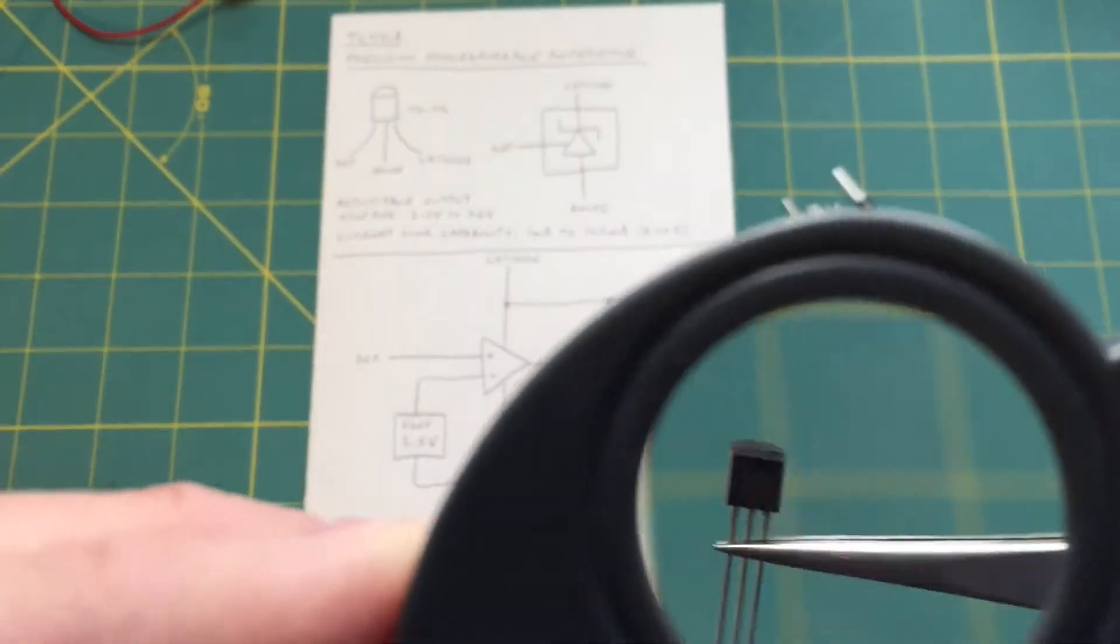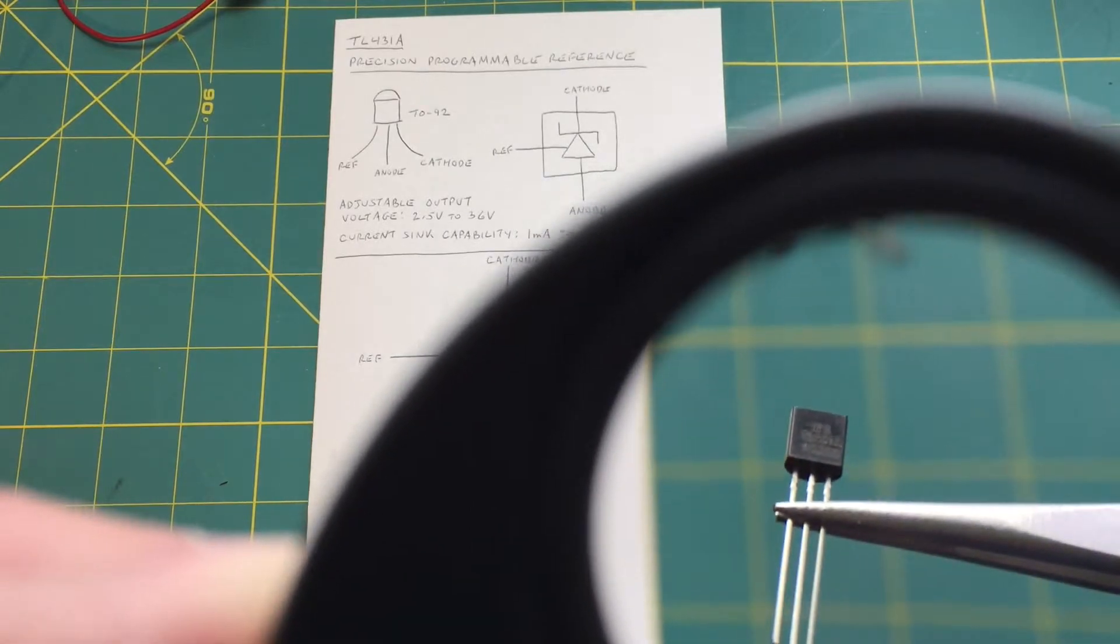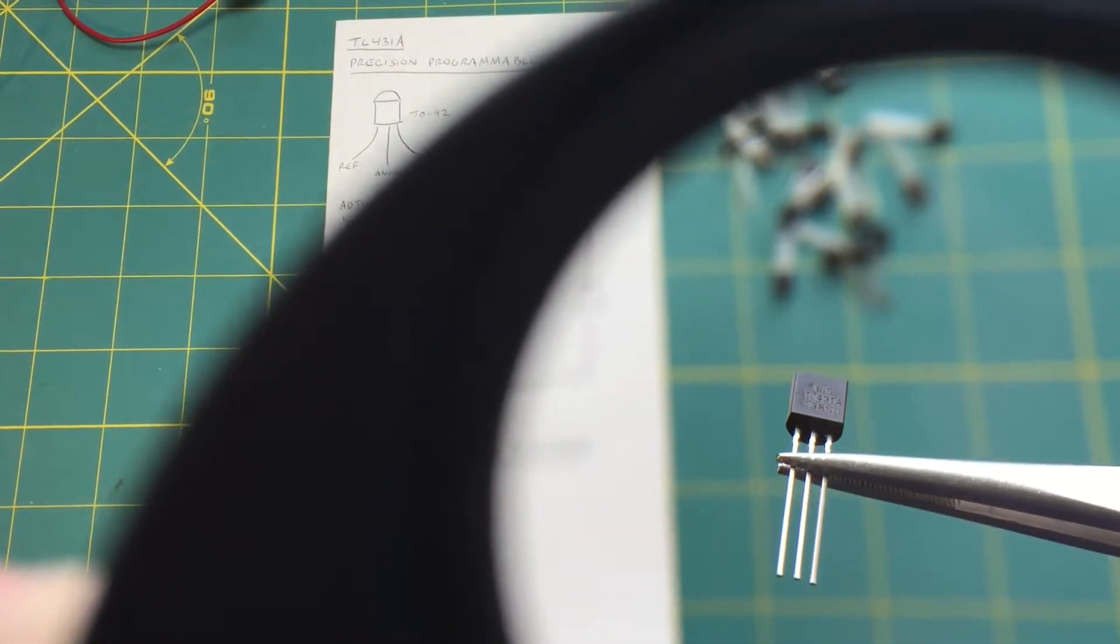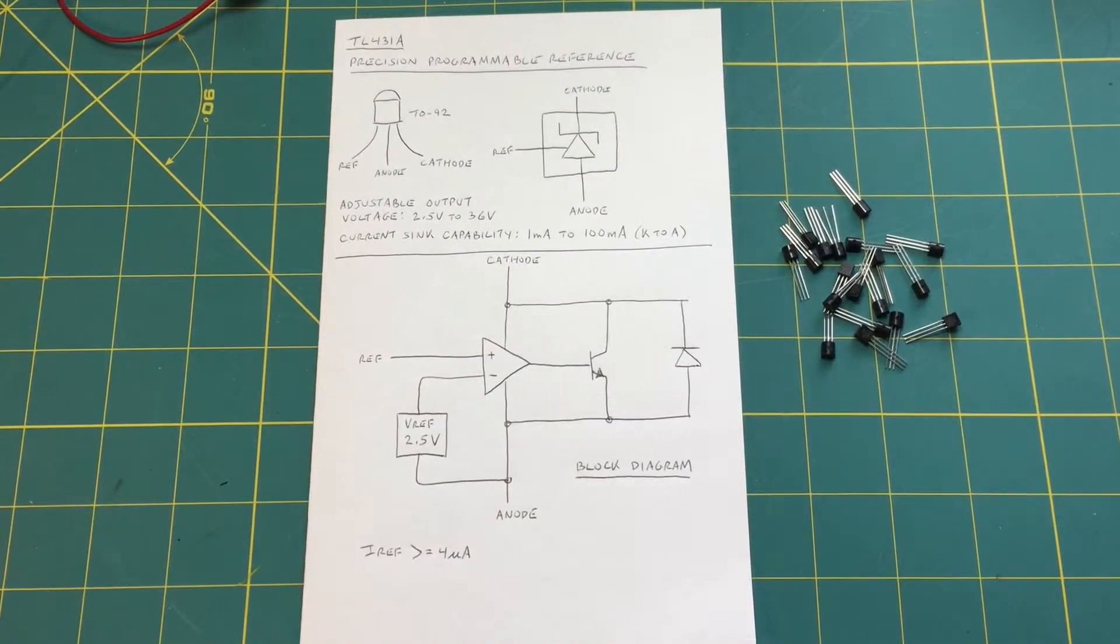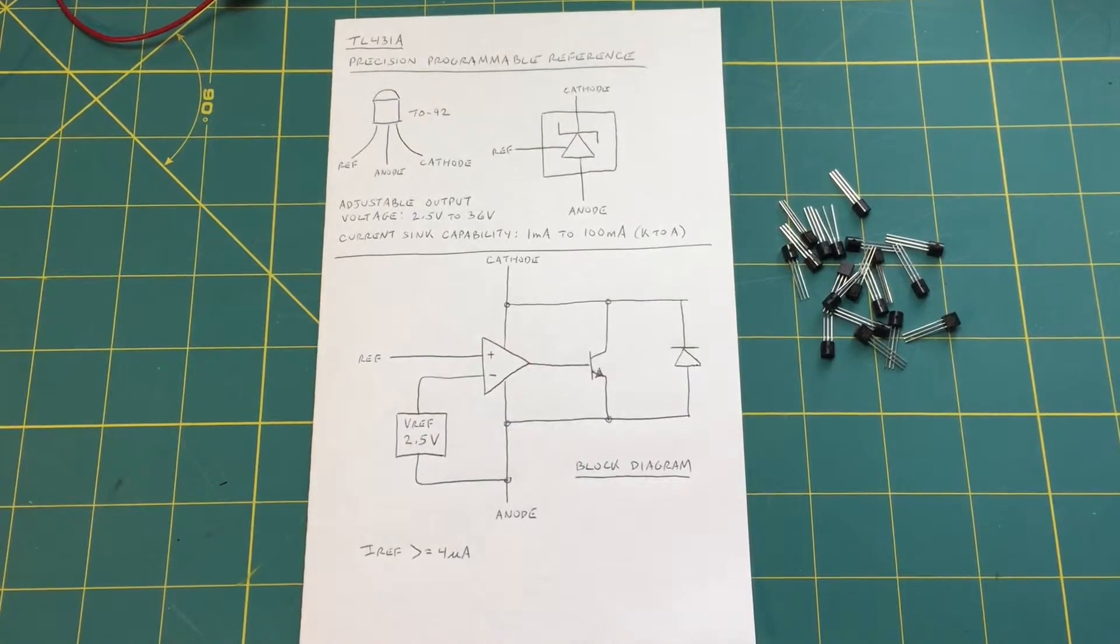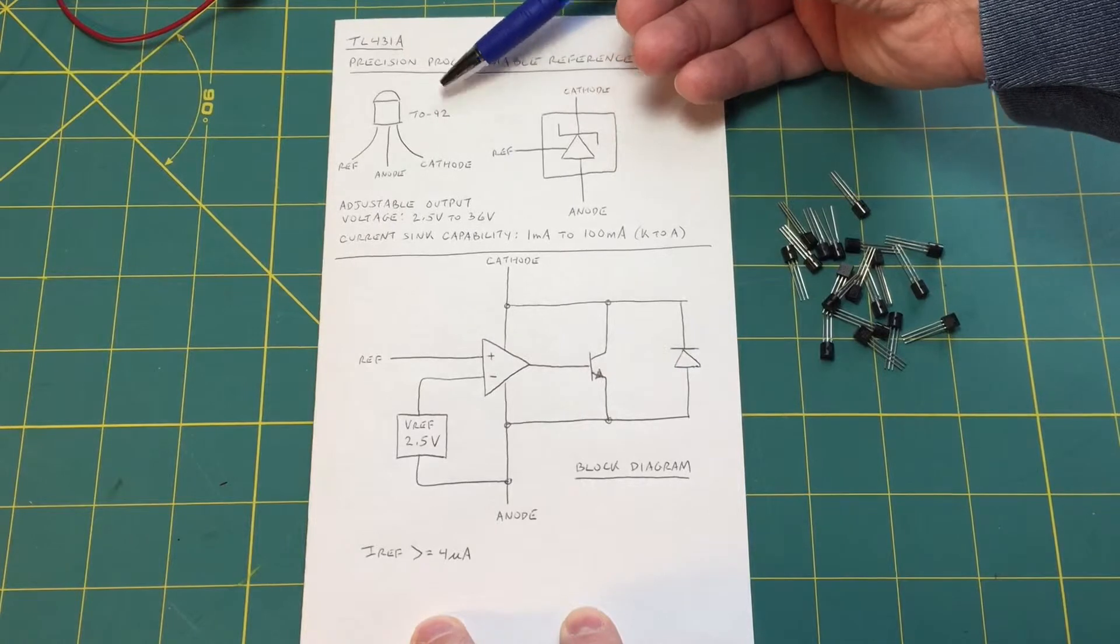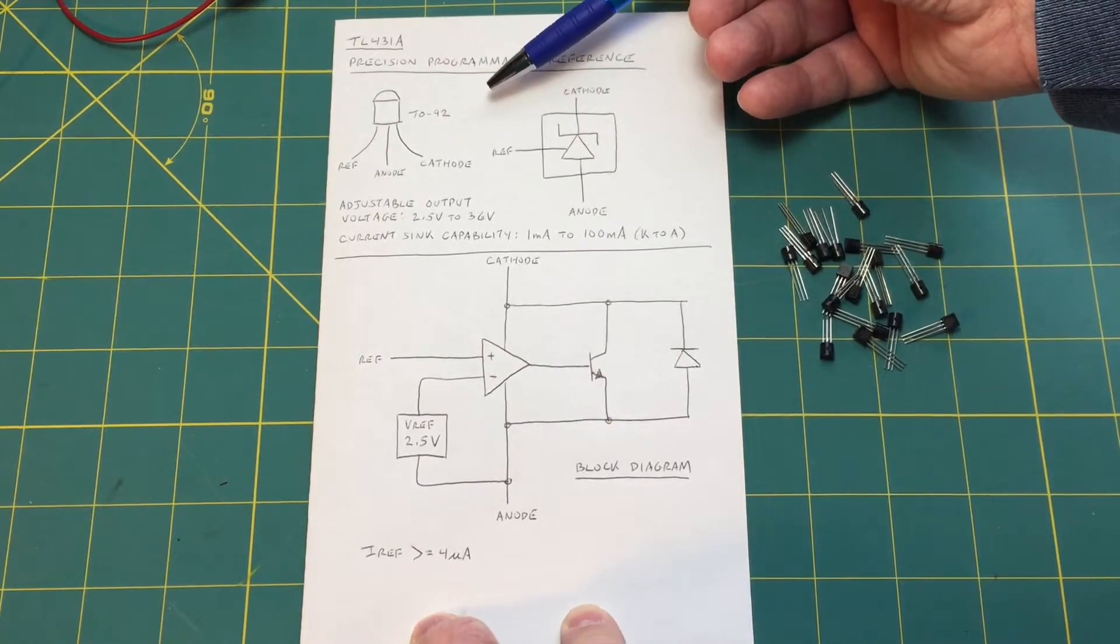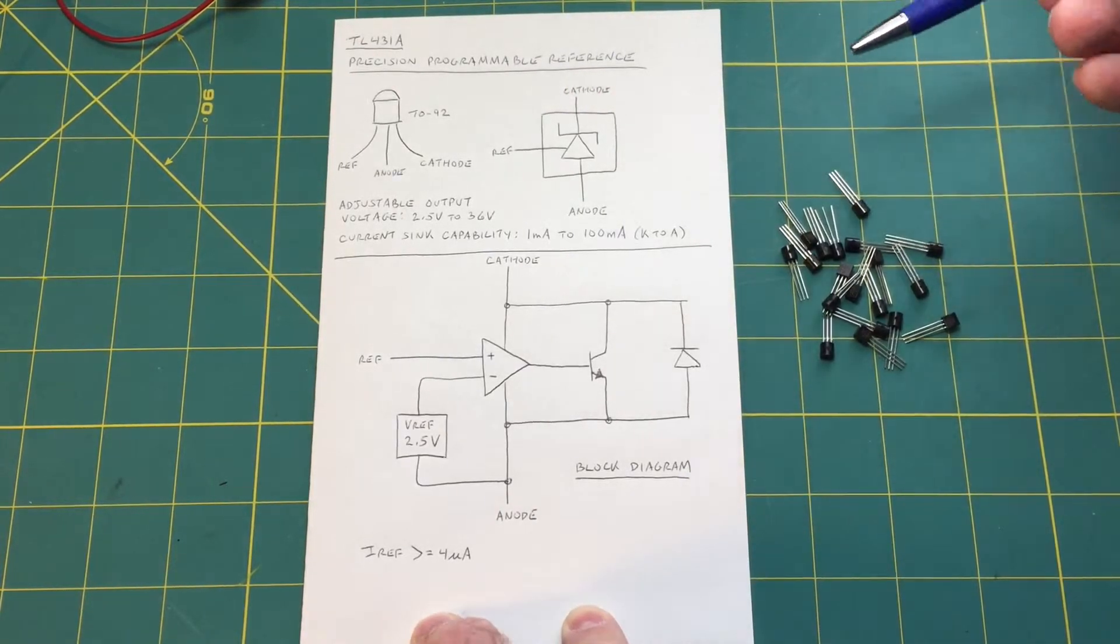Let's get up close. Can you see that? This is a TL-431 Precision Programmable Reference in the TO-92 package. These do come in surface mount packages but I opted for the TO-92 because they were cheap and easier to work with than a surface mount package would have been.